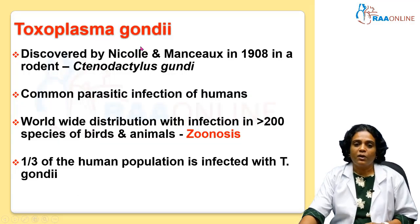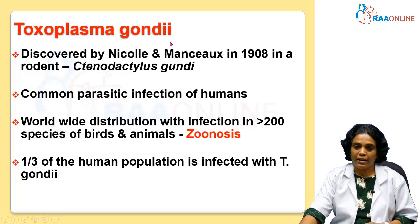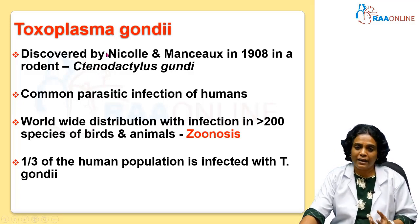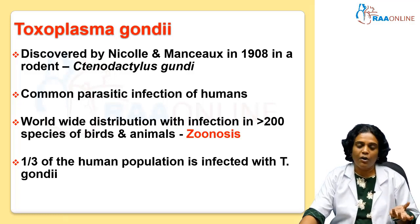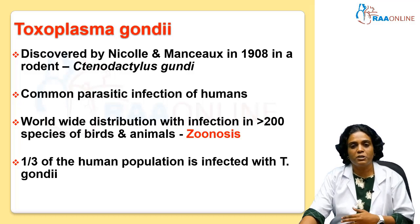Toxoplasma gondii was discovered by Nickell and Mankucs in the year 1908 in a rodent called Tenodactylus gondii, and that's why this is named as gondii. Toxo means arc. When you look at the morphology of the tachyzoite of Toxoplasma gondii, it looks like an arc or a brow, like an eyebrow. And hence it is named as Toxoplasma gondii.